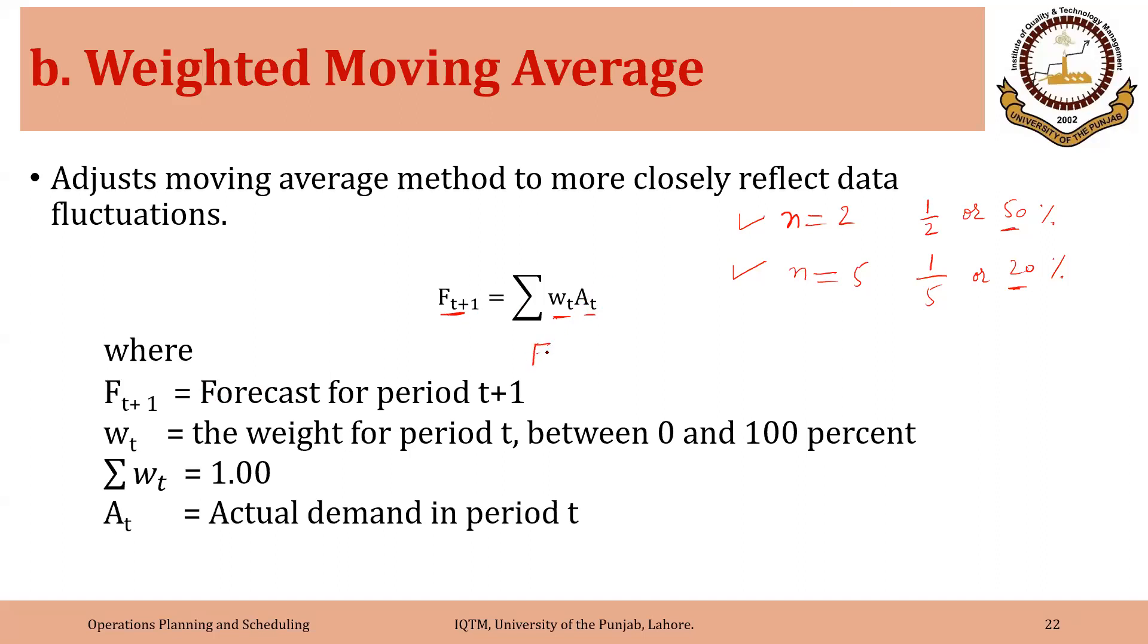For example, if we are forecasting for April, it could be something like 20% weightage given to the actual demand for January plus 30% weightage given to actual demand for February plus 50% weightage given to actual demand for March. So sum of these weights should be equal to 1. So 0.2 plus 0.3 plus 0.5 is equal to 1.